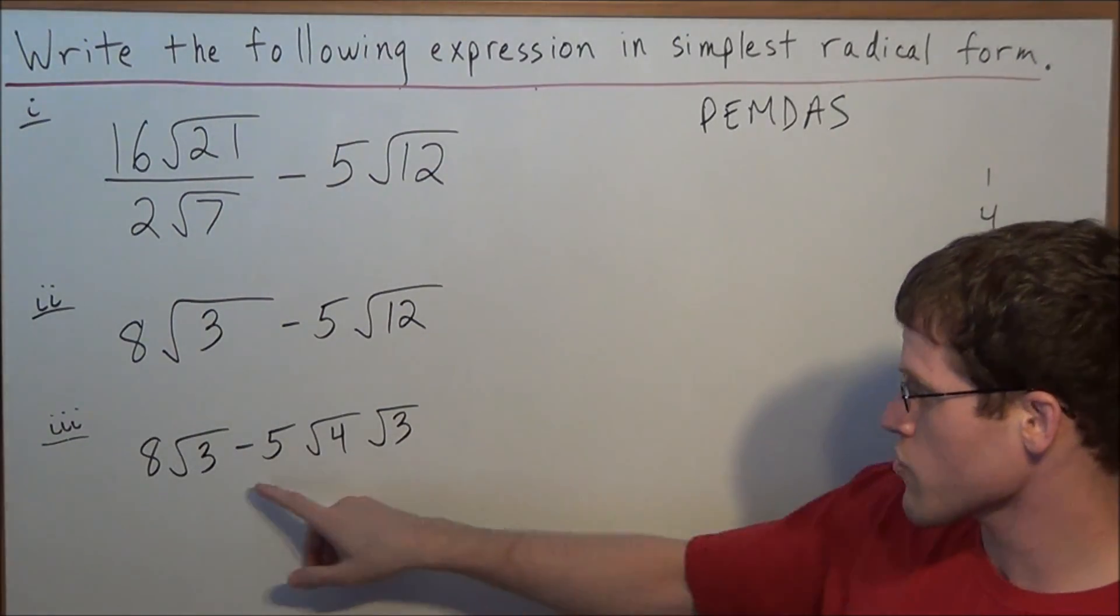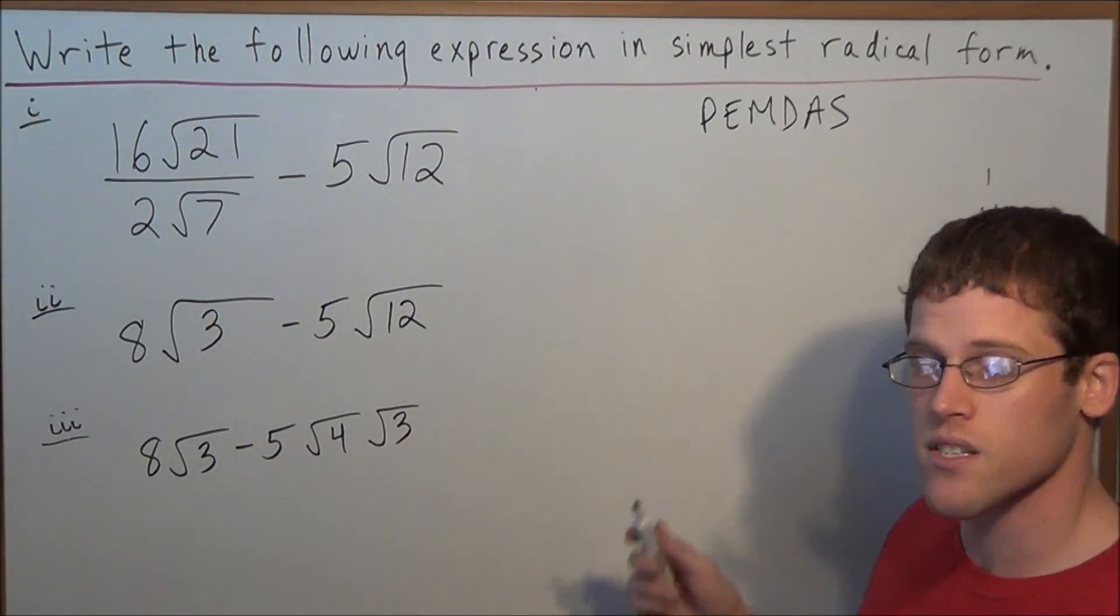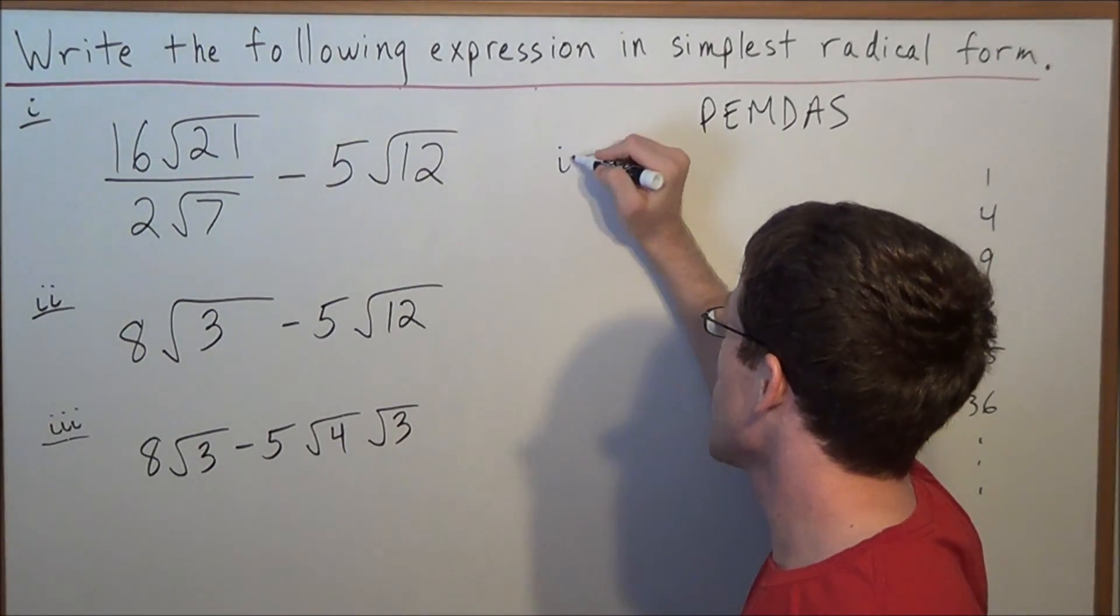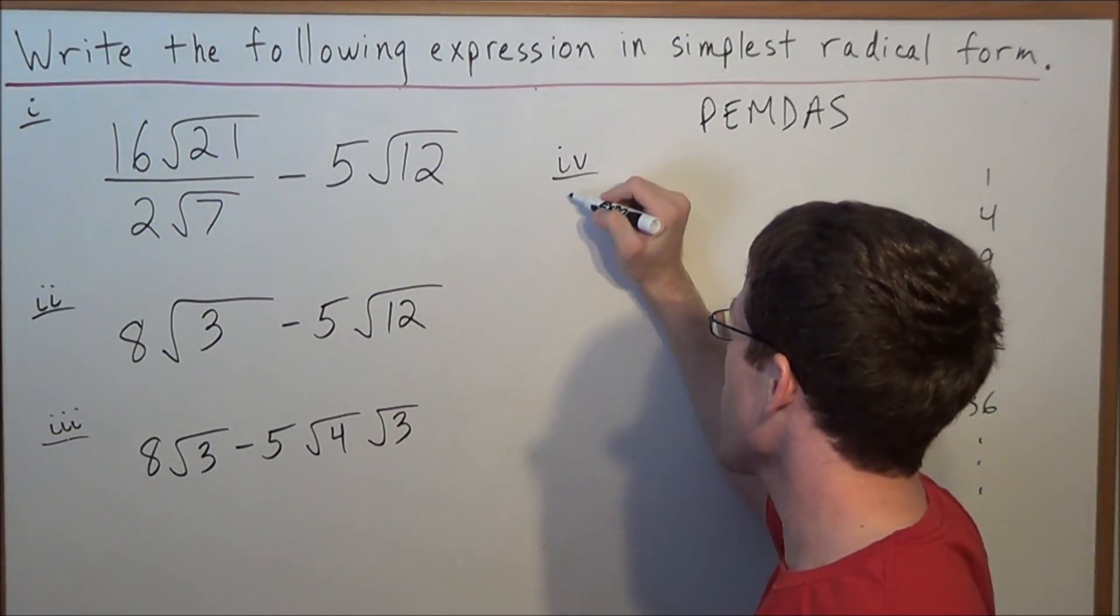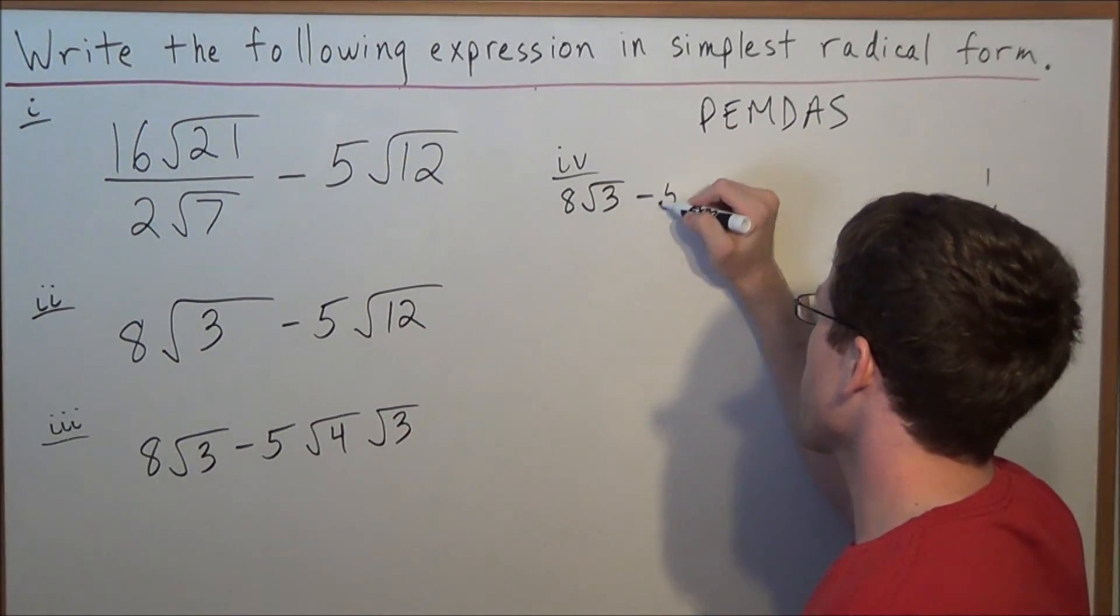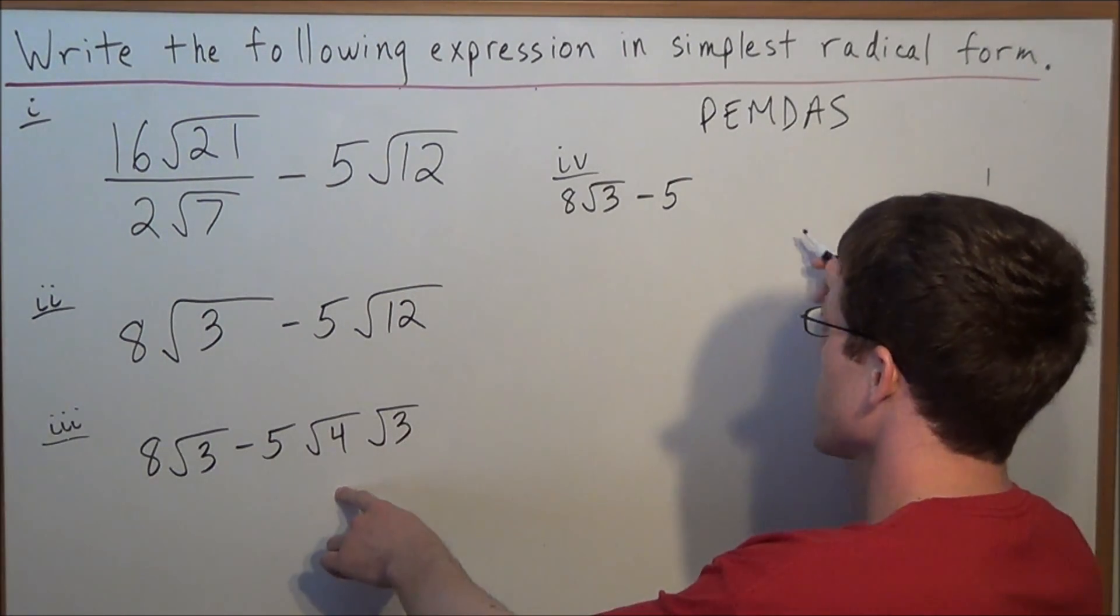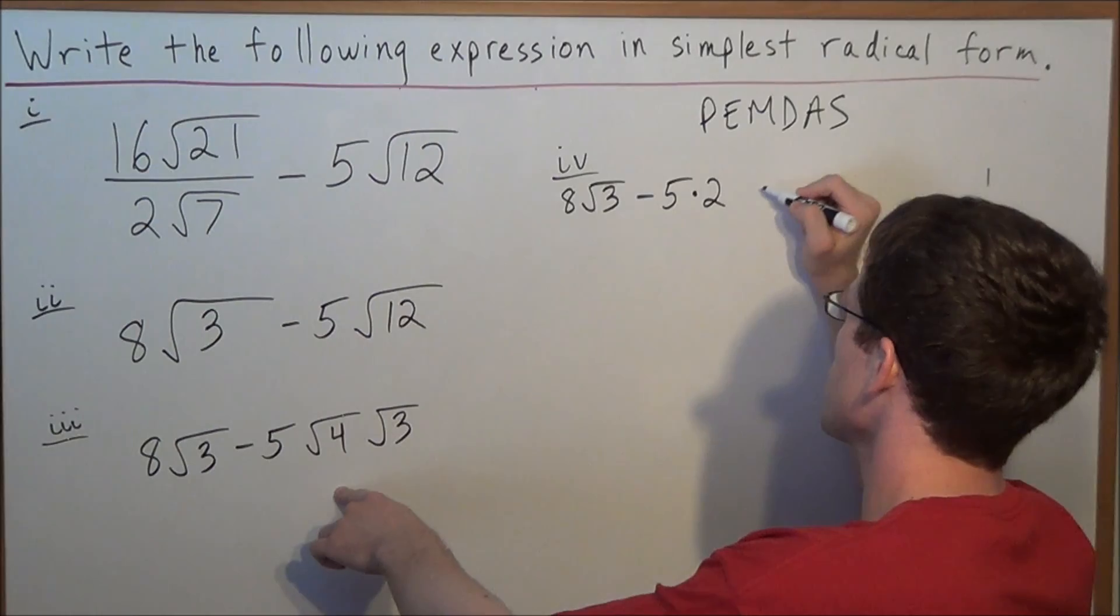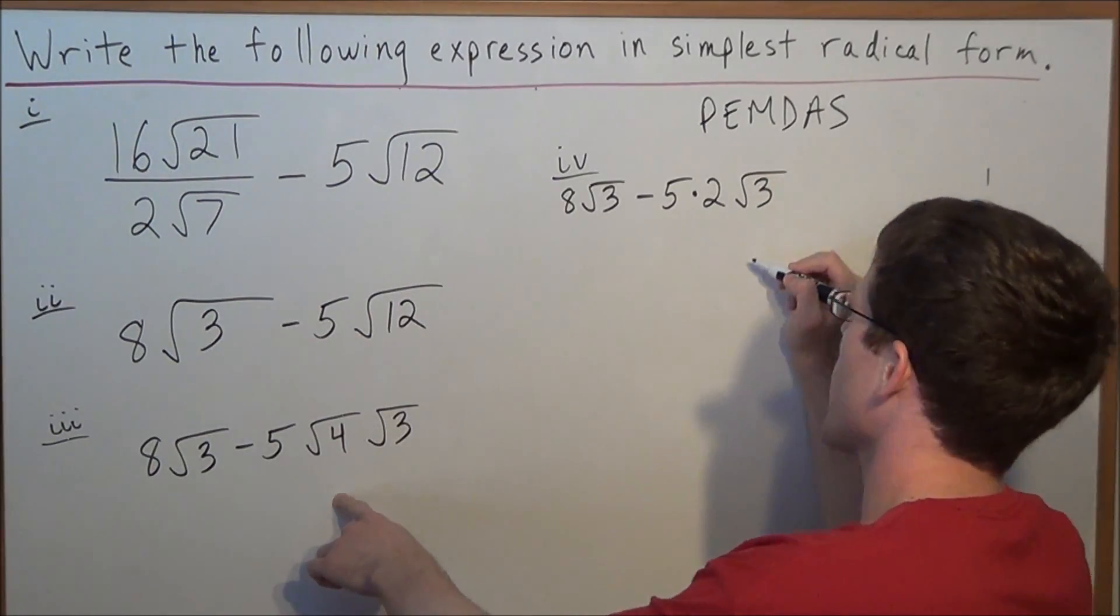So for the next line, this is really going to help us, the fact that we have matching radicals. For line 4, we have 8 radical 3 minus, and now we have 5, and now remember the square root of 4 is simply 2. So we have 5 times 2, radical 3.